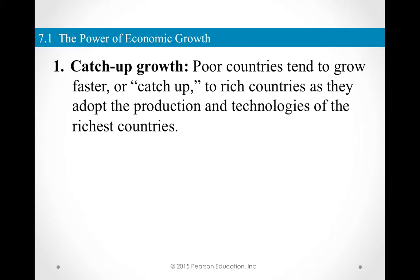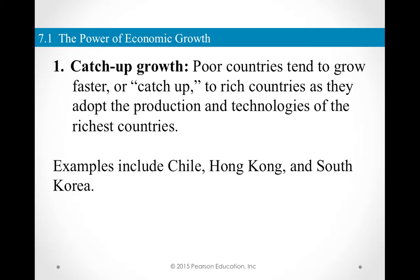Catch-up growth means poor countries tend to grow faster as they adopt the technologies and knowledge already available to them. They are not developing anything new, but they accumulate physical capital and human capital and continue to grow. So they have three sources of economic growth: physical capital, human capital, and adoption of technology. Examples from historical data include Chile, Hong Kong, and South Korea; current examples include India, China, and Brazil.